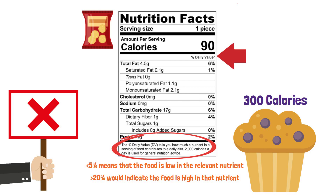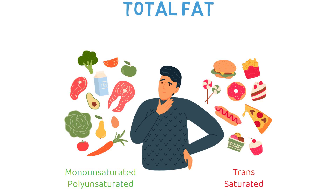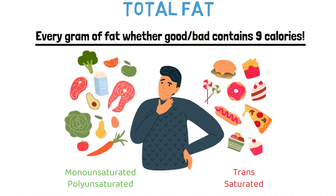Now that the basics of the nutrition label are explained, we can discuss the nutritional components, beginning with total fat. Total fat can be categorised into two subgroups: good and bad fats — the good fats being monounsaturated and polyunsaturated fats, while the bad fats are trans fats and saturated fats. These are not called good and bad because good fats contain fewer calories; every gram of fat whether good or bad contains 9 calories.